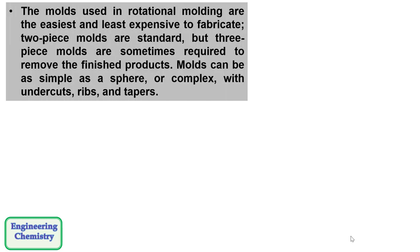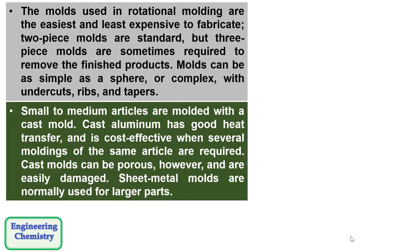The molds used in rotational molding are the easiest and least expensive to fabricate. Two piece molds are standard but three piece molds are sometimes required to remove the finished products. Molds can be as simple as a sphere or complex with undercuts, ribs and tapers. Small to medium articles are molded with a cast mold. Cast aluminum has good heat transfer and is cost effective when several moldings of the same article are required. Cast molds can be porous however and are easily damaged.